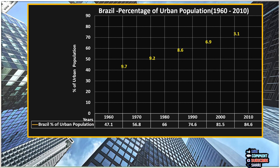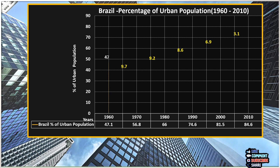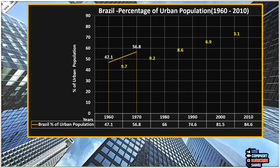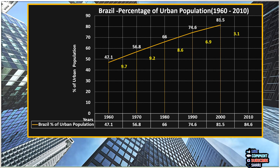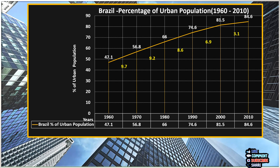Let's start drawing the line graph. In 1960 the percentage of urban population was 47.1%, then it grew to 56.8% in 1970. In 1980 it went up to 66%. In 1990 it was 74.6%. In 2000 it was 81.5%, and in 2010 the percentage of urban population grew up to 84.6%.